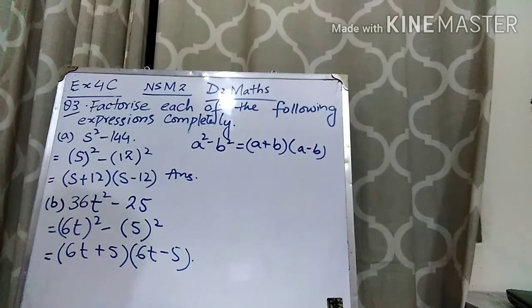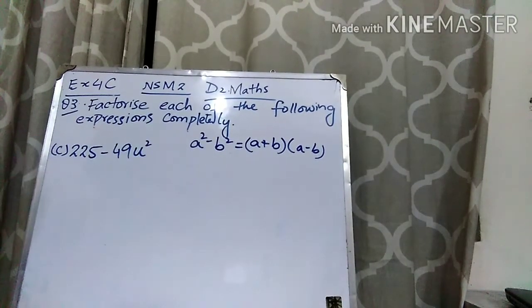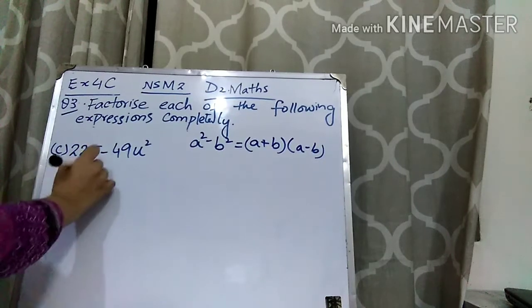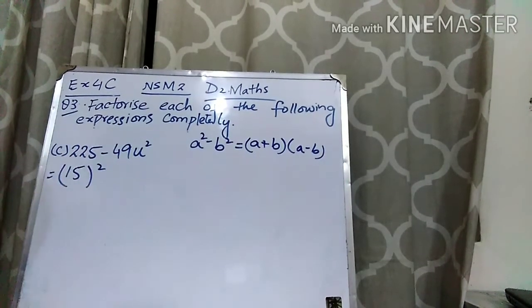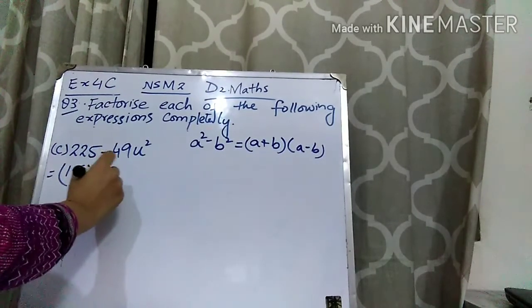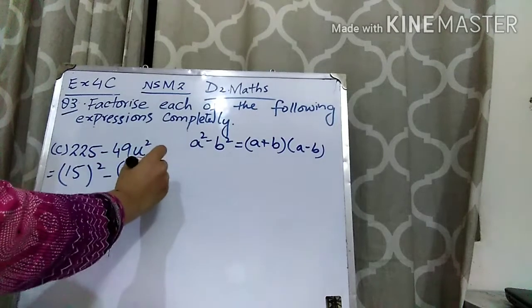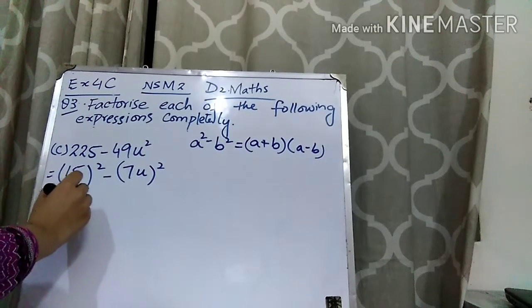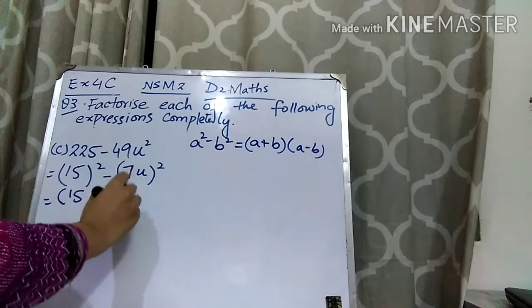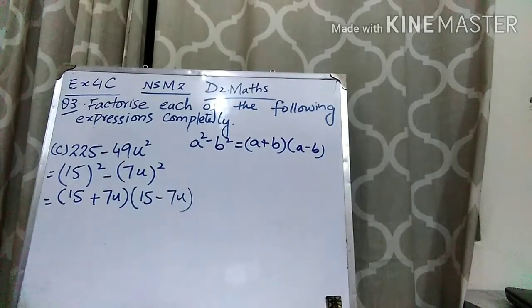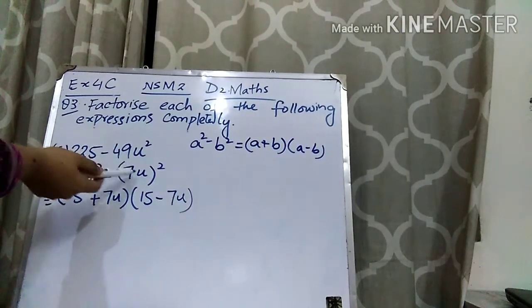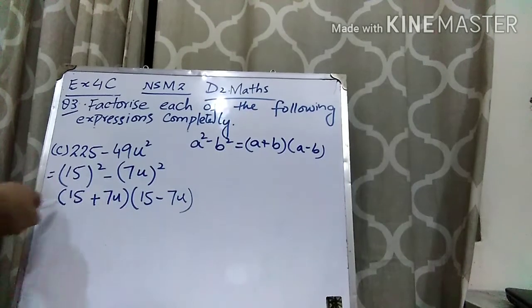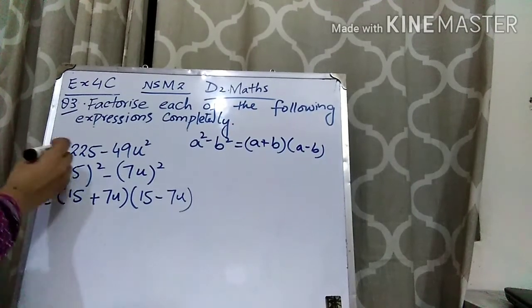Part C: 225 is the perfect square of 15 — when you multiply 15 by 15 you get 225 — so you can write 15 whole squared. And 49 is the perfect square of 7, so you can write 7U whole squared. A squared minus B squared, so I can apply the formula A plus B times A minus B. I hope part C is clear to you.